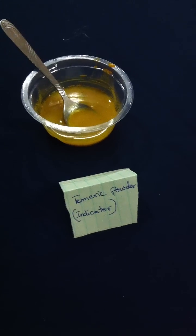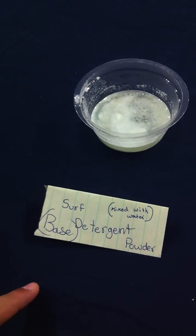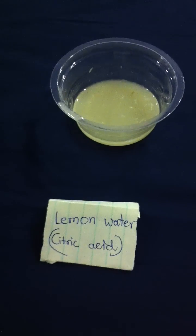Here I have the turmeric solution as the indicator. For bases, I have Surf detergent powder and dishwasher liquid. For the acids, we have lemon water for citric acid and vinegar for acetic acid.